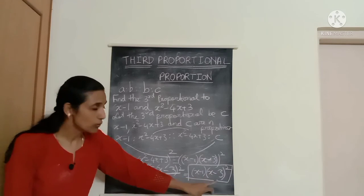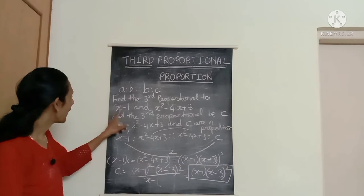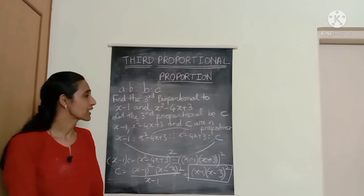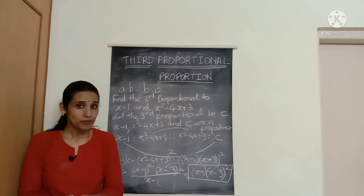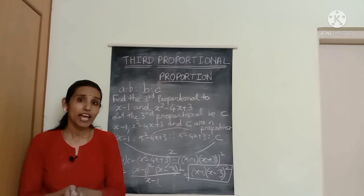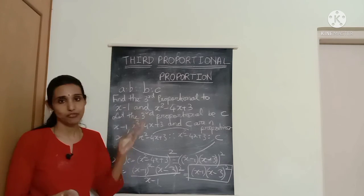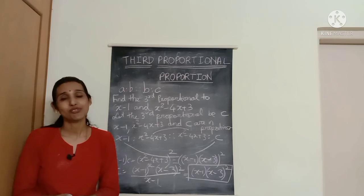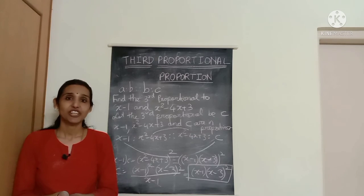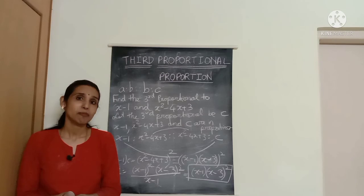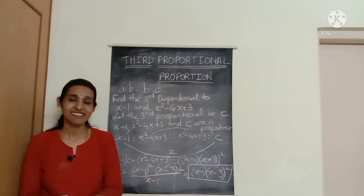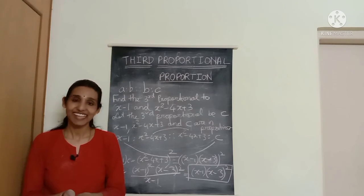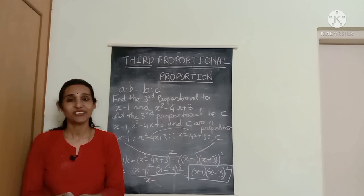So (x minus 1)(x minus 3) squared is the third proportional to (x minus 1) and (x squared minus 4x plus 3). I hope this video helped you understand the concept of third proportional. If you found it useful, do like, share, and subscribe to Enjoy Math, and leave your comments below. Till we meet again, take care.